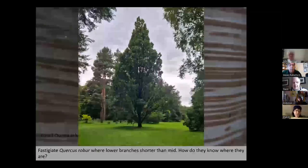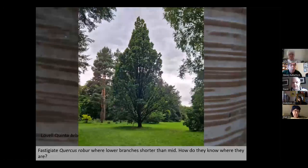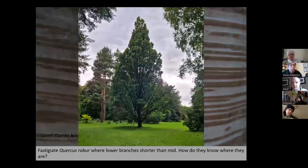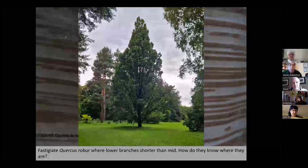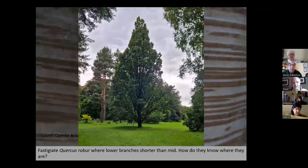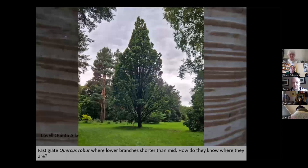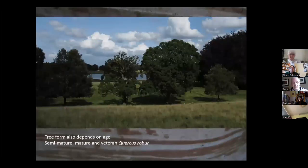We can also look at the different shapes — the form of trees. This is a fastigiate Quercus robur, one of my favourite trees at the arboretum, with its short lower branches and longer mid branches producing that fastigiate shape. I marvel at it — how does each individual branch know where the others are, differently because of shade, to produce that wonderful coordinated form?